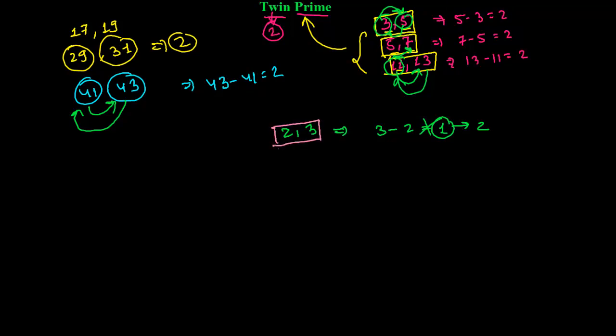So, the state of 2 and 3 is not a twin prime, okay. So, our first twin prime is 3 and 5. This state is the first twin prime. Second twin prime state is 5, 7. And, another one is 9 is not a prime number. It's a composite number, right. So, next one is 11 and 13.